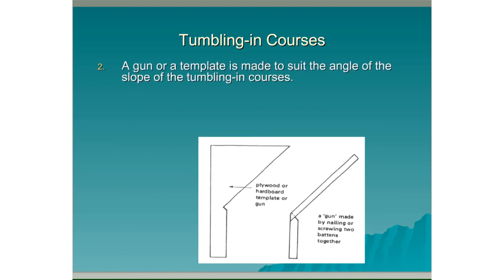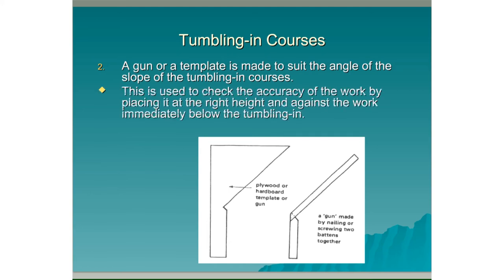A gun or a template is made to suit the angle of the slope of the tumbling in courses. This is used to check the accuracy of the wall by placing it at the right height and against the wall immediately below the tumbling in. It is therefore most important that this wall is kept truly plumb.